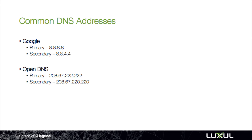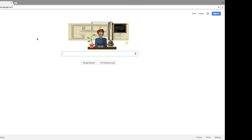Shown on this page are some commonly used and free primary and secondary DNS addresses from both Google and OpenDNS. Let's say I'm going to use the Google addresses in this case.